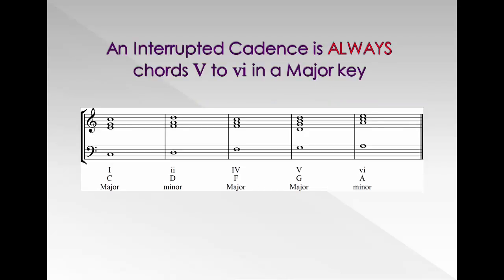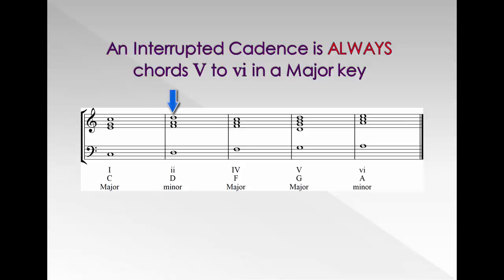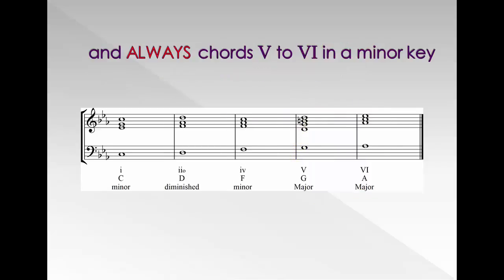An interrupted cadence is always chords V to VI in a major key. And always chords V to VI in a minor key.